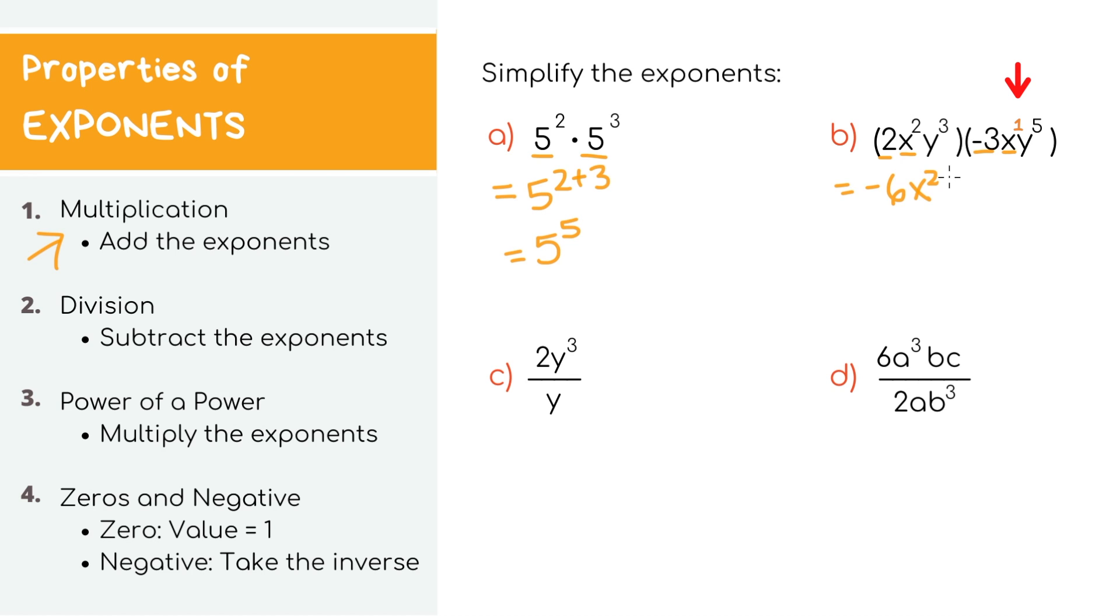So we'll add the two exponents, which is 2 plus 1. Finally, let's simplify the y's and add the exponents 3 plus 5. Once you start understanding the concept a little better, you can skip this middle step and just add the exponents in your head. But anyways, we'll end up with –6x³y⁸, which is our final answer.